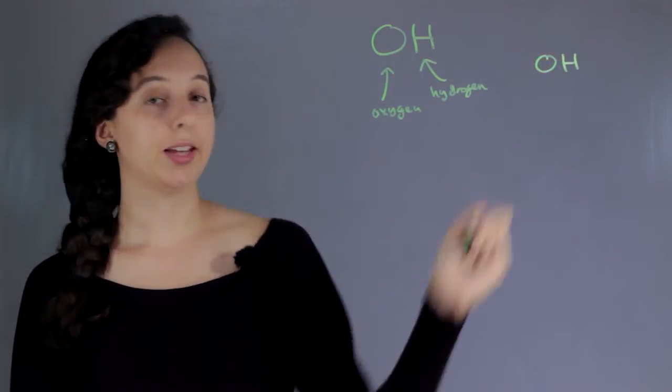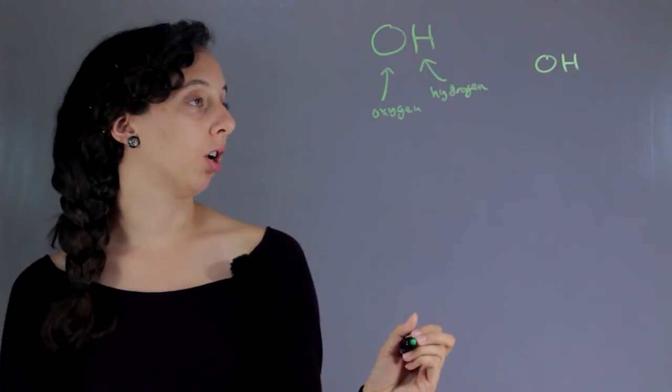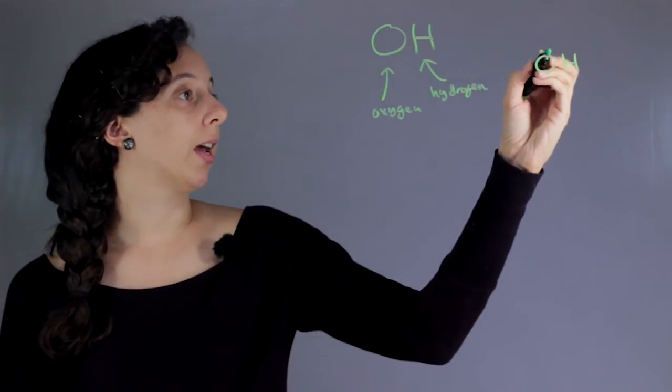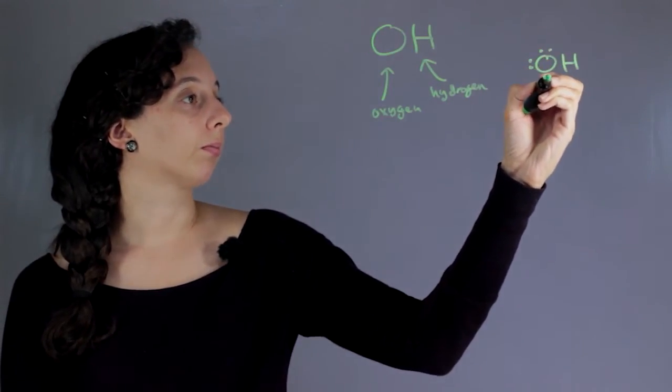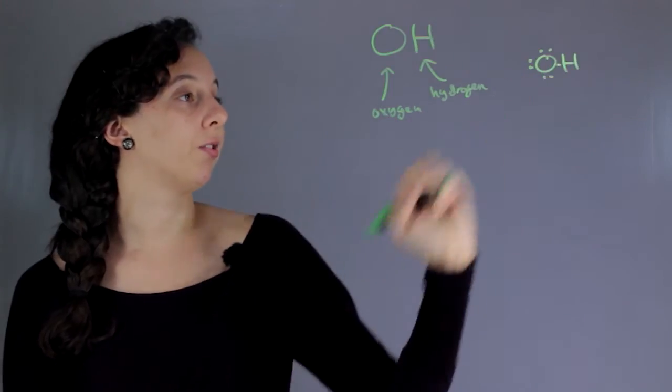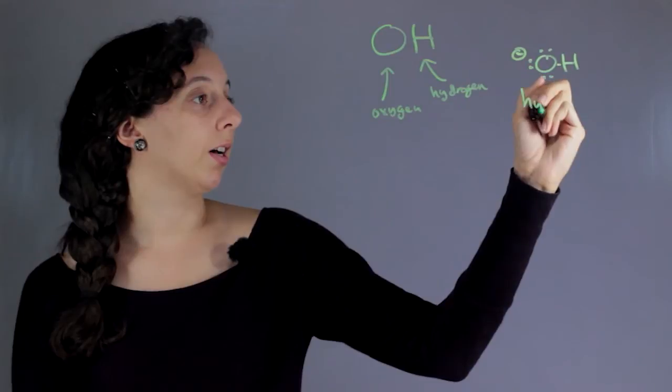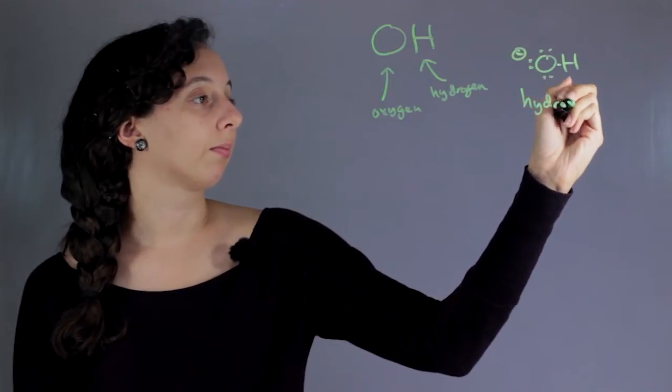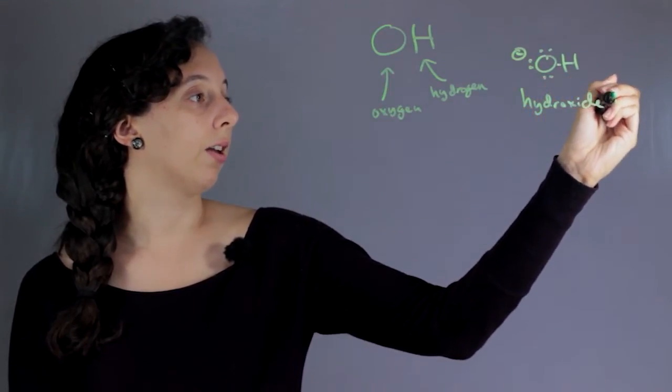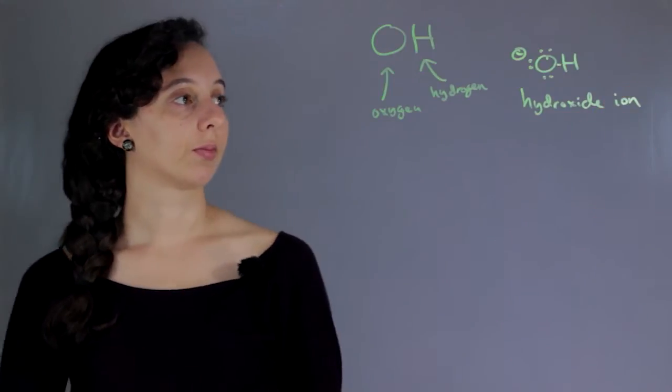...by itself, it will actually have a negative charge because this oxygen has three lone pairs as well as a bond to the hydrogen. This is called a hydroxide ion.